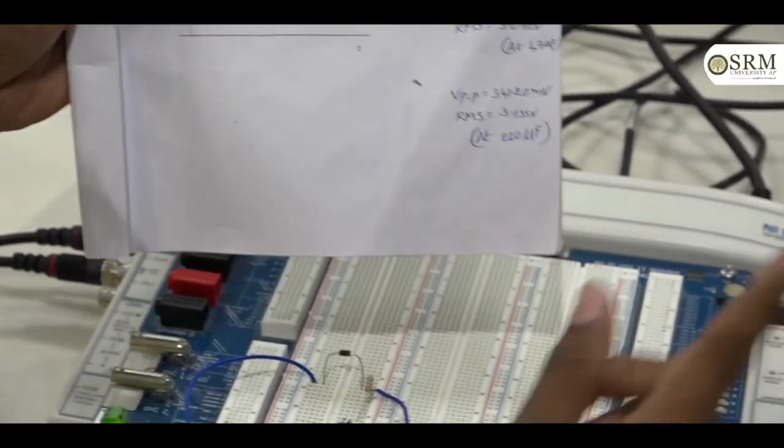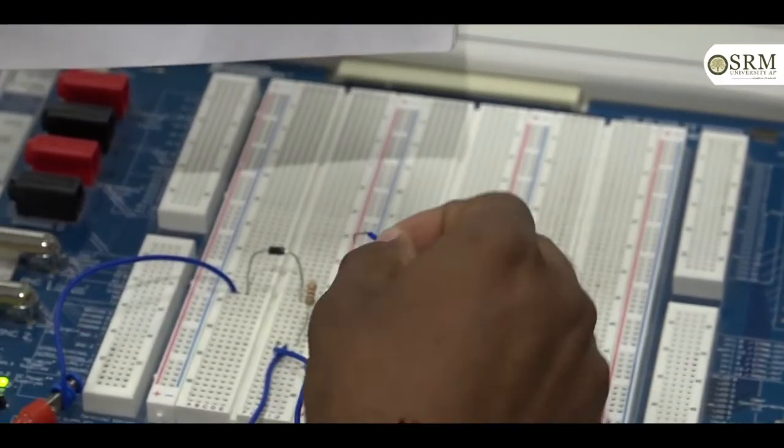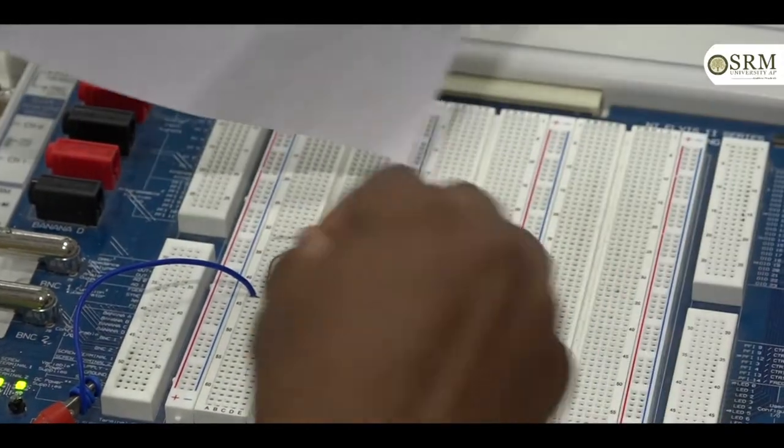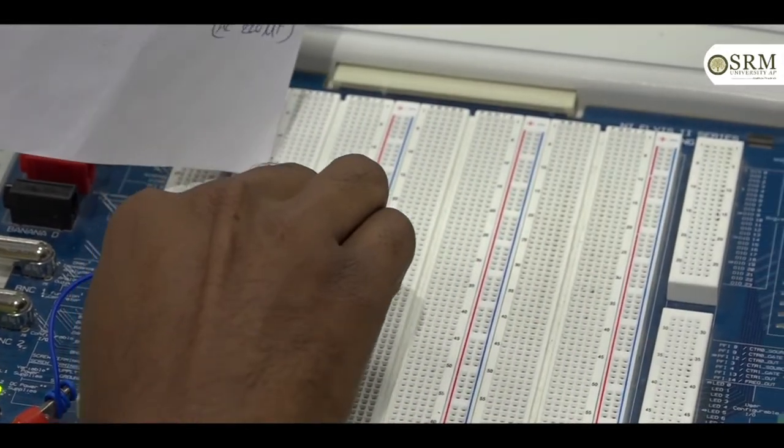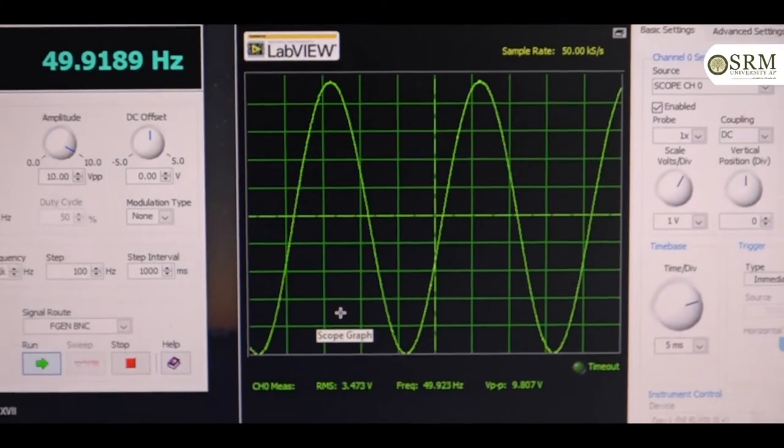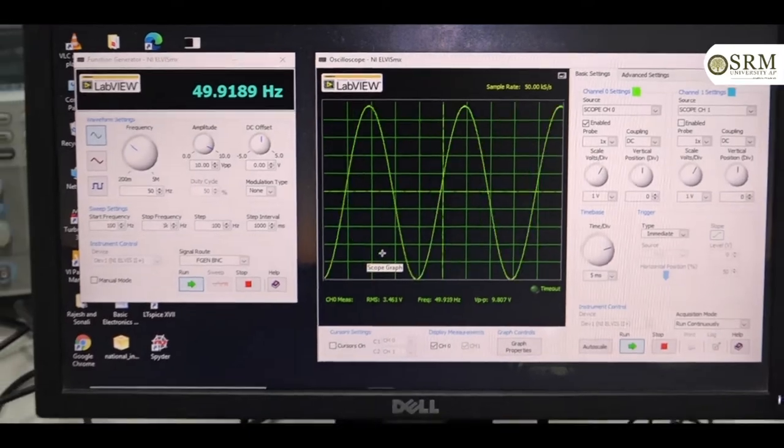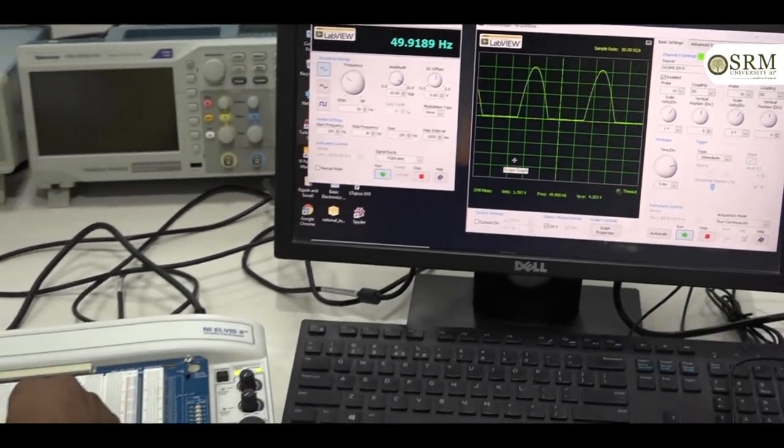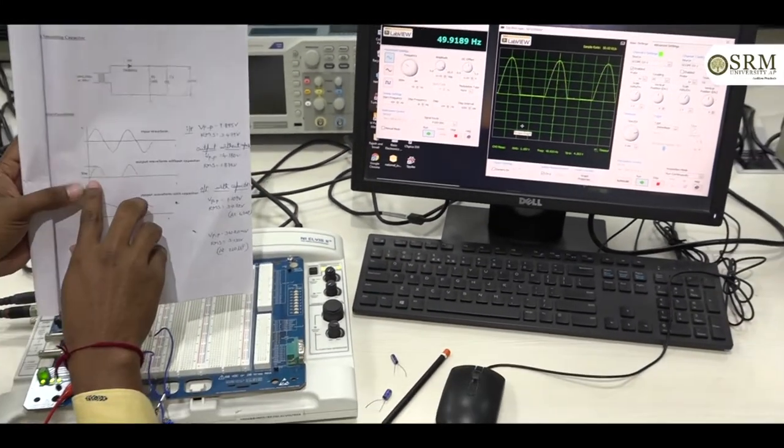We can see input signal also. We can simply remove and place insert to input signal. Yeah, that is the input signal we are giving 10 volts peak to peak and 50 Hz frequency. And we can see the similarly output signal. This is the half wave rectifier output signal.